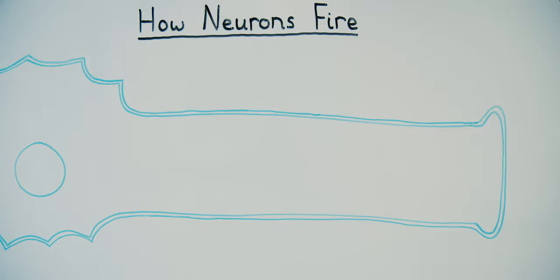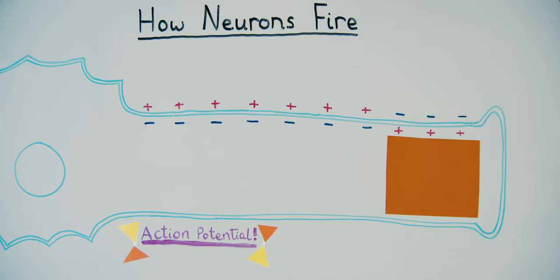Neurons fire in response to electrical signals created by the relative charge between the outside and inside of the cell. At its resting state, the inside of the neuron is more negative. Influx of positive ions through channels, like sodium, cause the neuron to become more positive until it reaches a threshold. This creates an action potential, where the positive charge is relayed down to the synapse, causing signaling to the next cell.